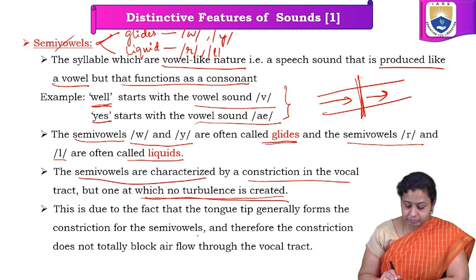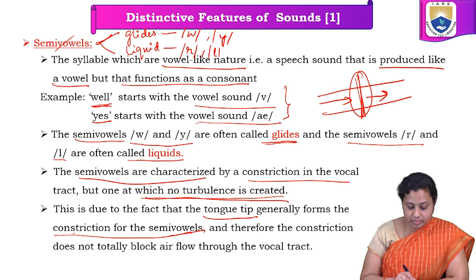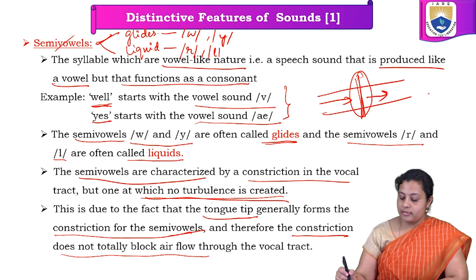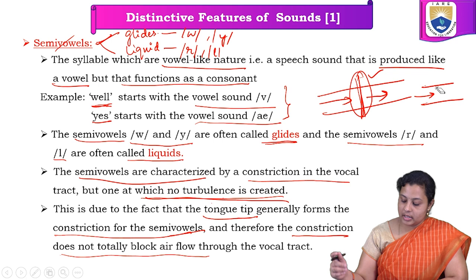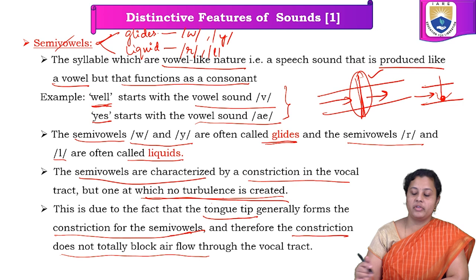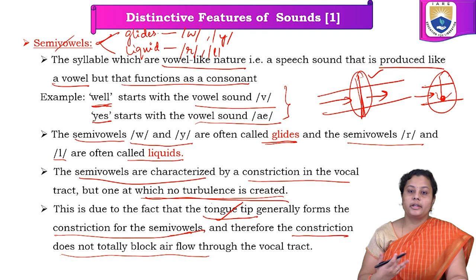The part where this constriction is created is the tongue. For all forms of semi-vowels, the tongue tip forms the constriction. Since the tongue is positioned inward, the constriction generated does not totally block the airflow. In the vocal tract, a constriction can completely block the airflow, or it can just partially block it, creating a small opening where airflow can pass through but in a different direction. This type of obstacle is required for semi-vowels and is created by the tongue tip.